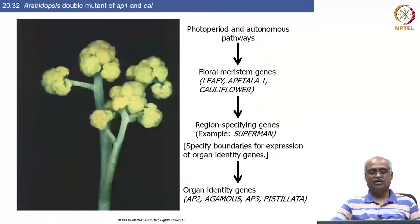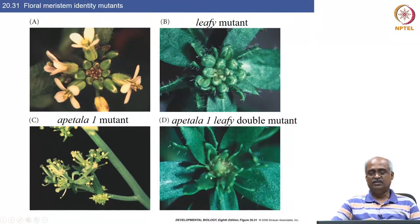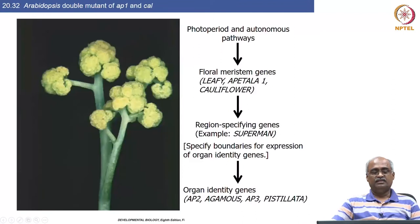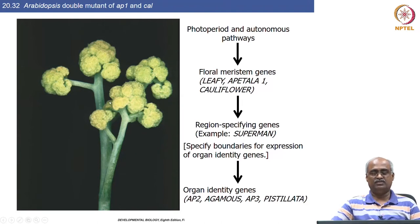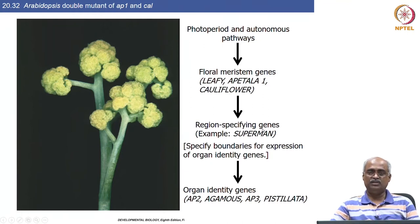In the last class we saw that mutations in floral meristem identity genes such as leafy and apetala create phenotypes where floral organs are essentially transformed into leaf or leaf-like structures. This is the apetala1 and cauliflower double mutant, where inflorescence meristems repeatedly form instead of floral meristems, giving a cauliflower-like appearance. The floral meristem genes activate region-specifying genes which control the boundaries of expression of the floral organ identity genes.